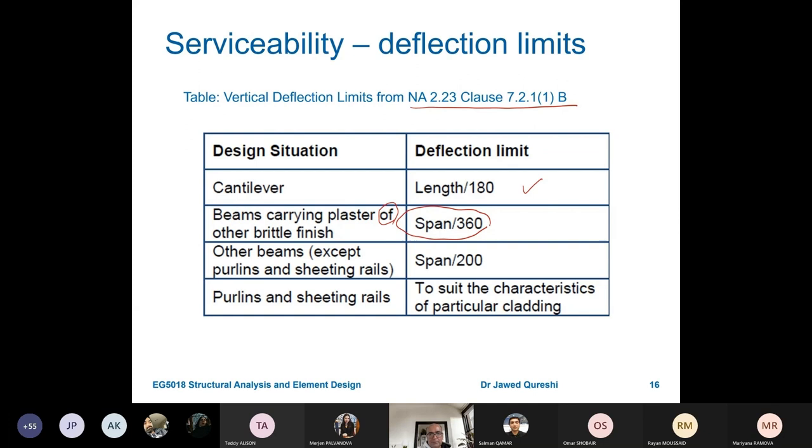This is the most common one that we use. So other beams except purlins and sheeting rails. For roof beams, I think we use this one. But span over 360 is the most common one for beams carrying brittle finishes.